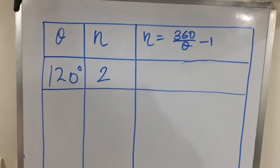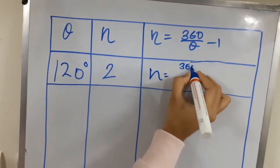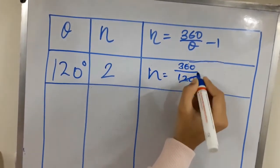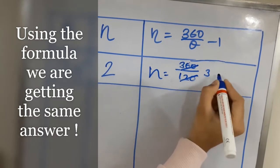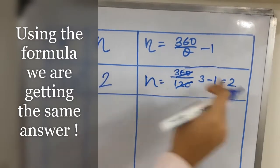Let us calculate using the formula. So n equals 360 divided by theta which is 120, and we get 3. 3 minus 1 equals 2. So our number of images are 2.